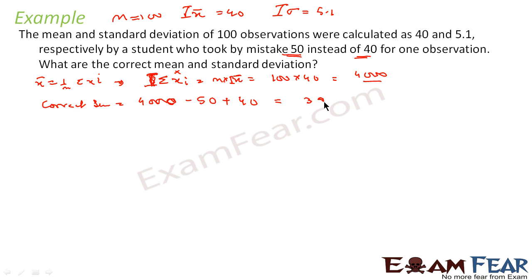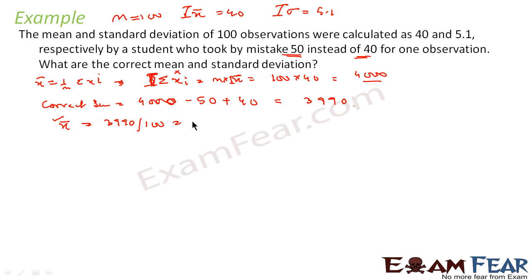So the correct sum = 4000 − 50 + 40 = 3990. Therefore, the correct mean = 3990 / n = 3990 / 100 = 39.9. So we have obtained the correct mean as 39.9.